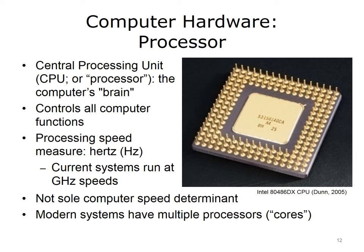The CPU's processing speed is measured in hertz. Current systems run at gigahertz speeds, which are equivalent to billions of machine cycles per second. Having a fast CPU will give you a fast overall computer system, but is not the only determinant of the overall computer's speed. We will talk about other factors that affect computer performance in addition to processor speed. Modern systems have multiple CPU systems, or cores. Such computers can execute multiple instructions concurrently, which significantly improves overall computer speed.